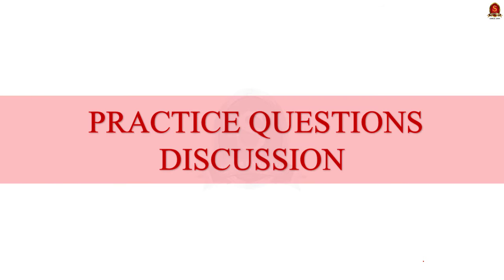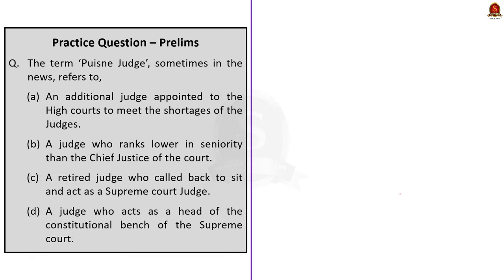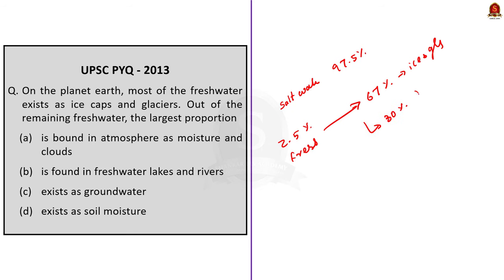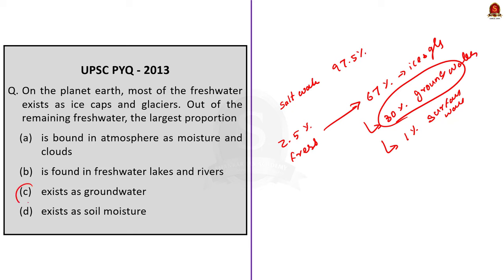We now have five practice prelims questions. Question 1: The term 'puisne judge' sometimes seen in news refers to — the correct answer is option B: a puisne judge is a judge who ranks lower in seniority than the Chief Justice of the court. Question 2: In planet Earth, most freshwater exists in ice caps and glaciers. Out of the remaining freshwater, the largest proportion — the correct answer is option C: exists as groundwater. About 97.5% of Earth's water is saltwater; of the 2.5% freshwater, approximately 67% is frozen in glaciers and ice caps, around 30% is stored underground, and only 1% is in surface sources like lakes, ponds, and rivers.